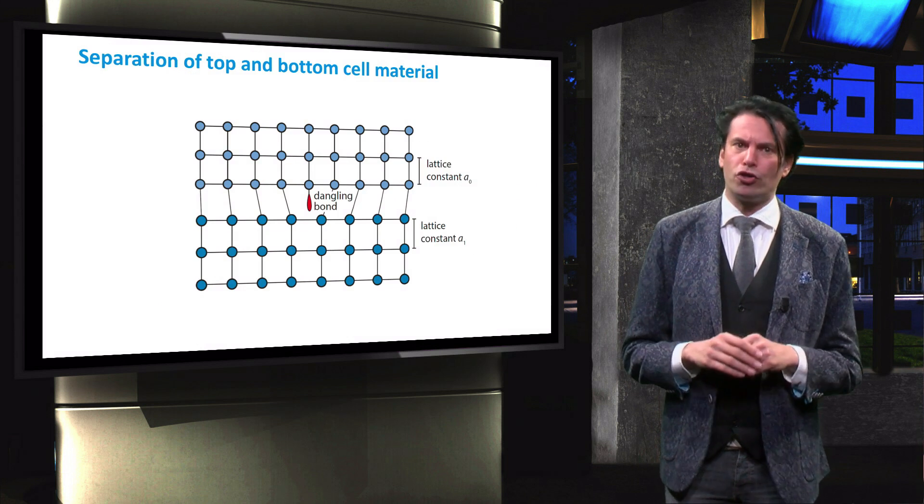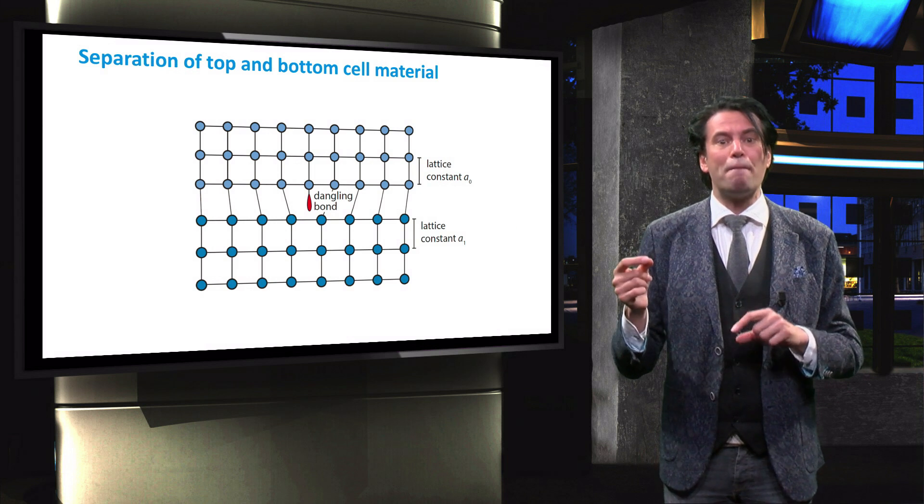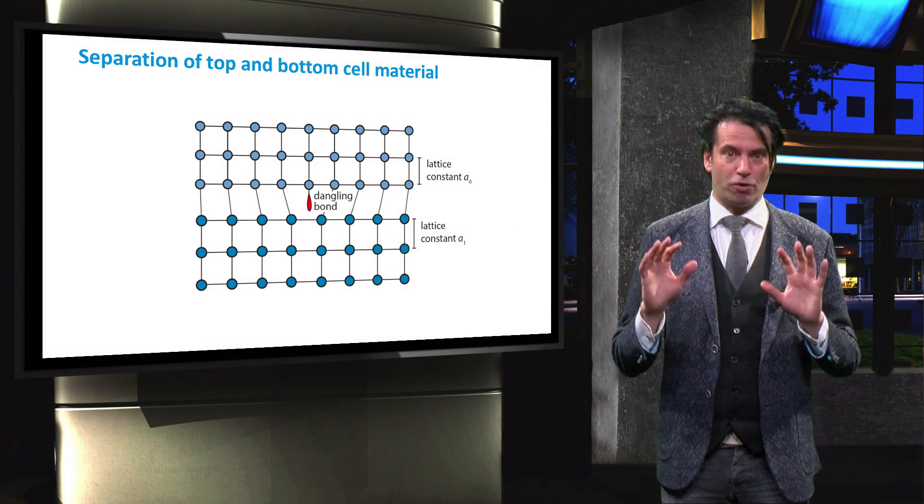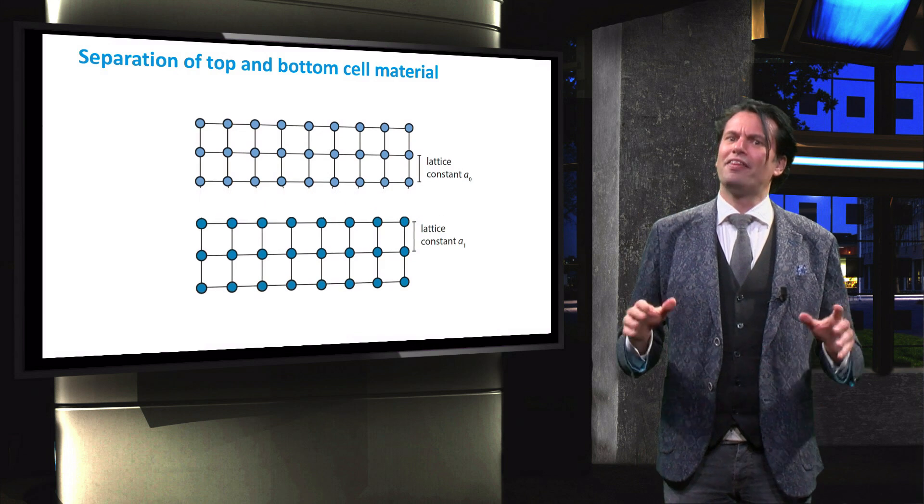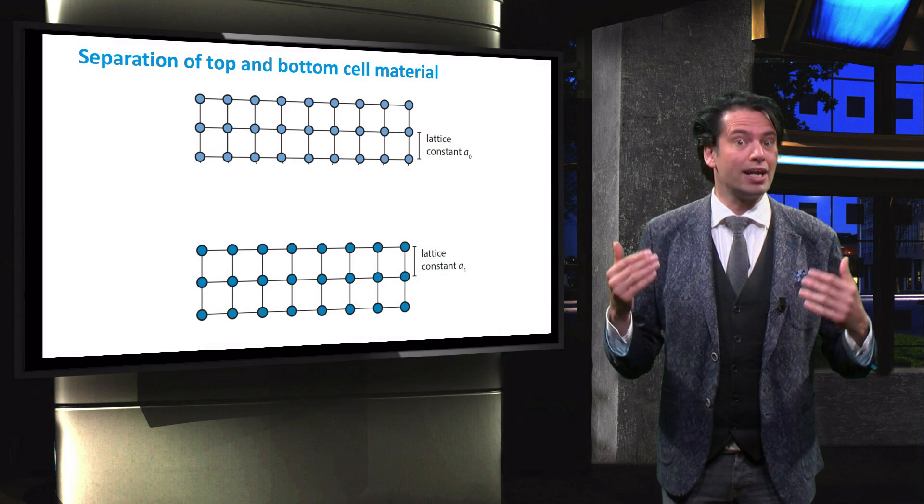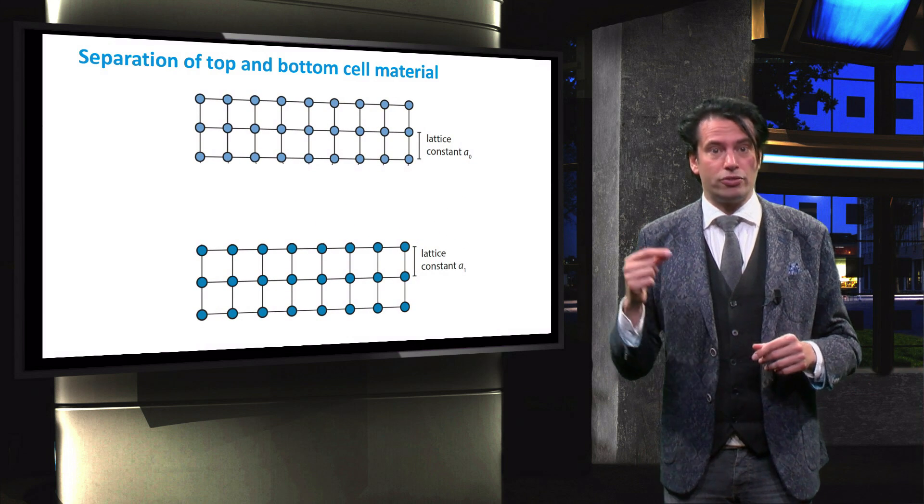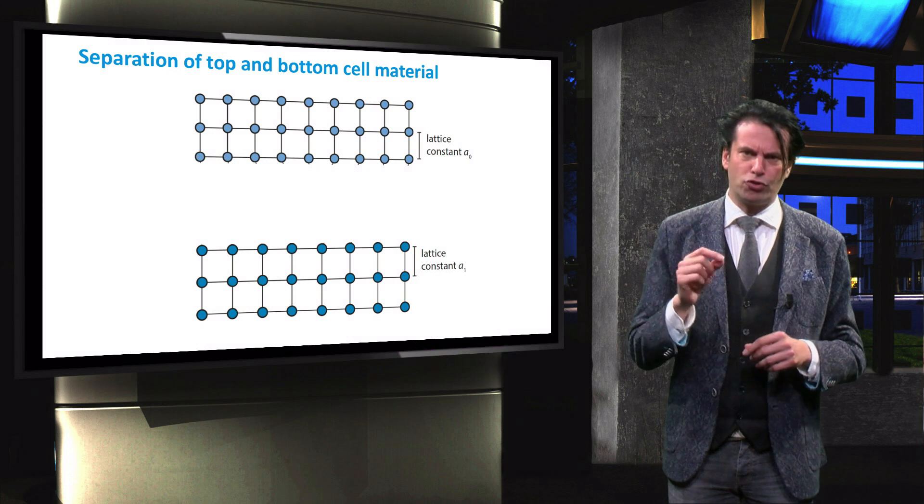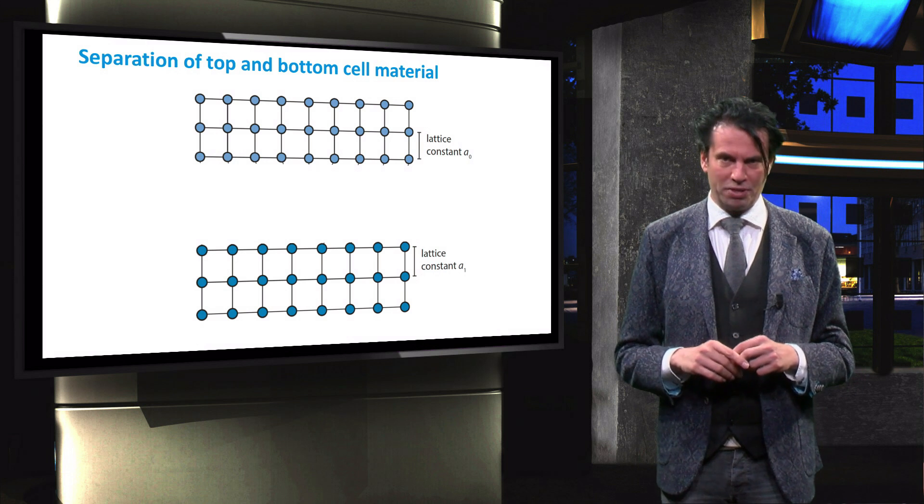One of the major advantages of a four terminal device is that the top and bottom cell are separated from each other. Therefore, there are no constraints regarding lattice matching. This in turn results in increased possibilities of top and bottom cell material combinations.